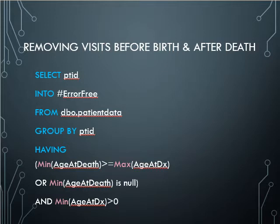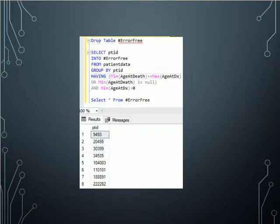You can play around with this if you want to look at dates, ages, or certain age groups. For example, if you wanted only adult data, you could set the minimum age at diagnosis to be greater than 18. When run in SQL server, this returns patient IDs only for patients who were born and had a date of diagnosis prior to their date of death.